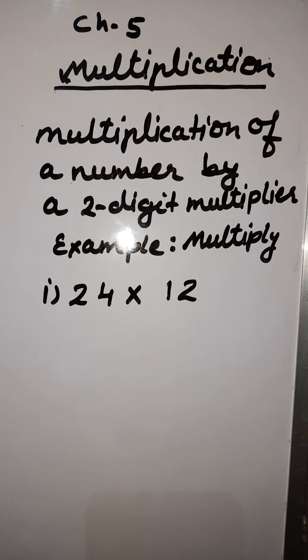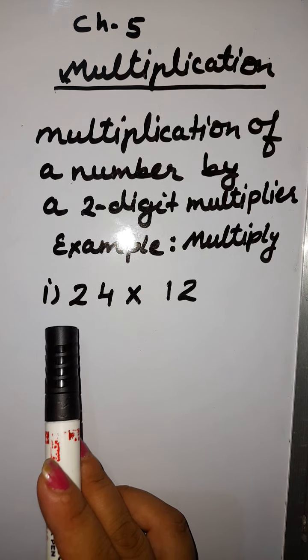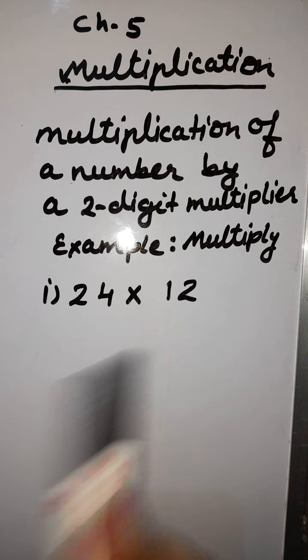So we will learn how to multiply any number with a two digit multiplier. Suppose we have an example here: multiply 24 by 12.